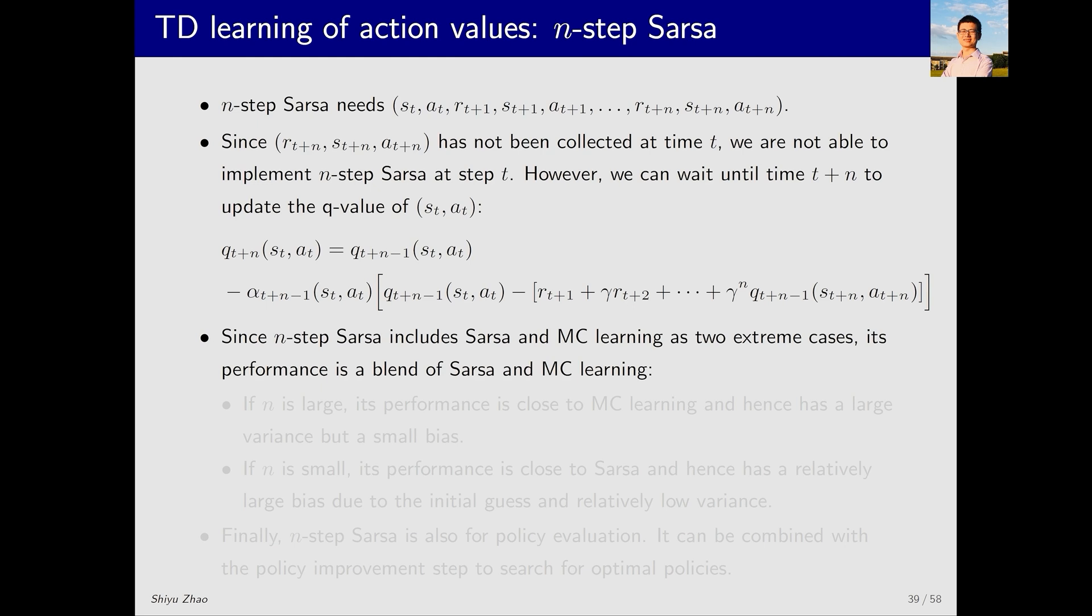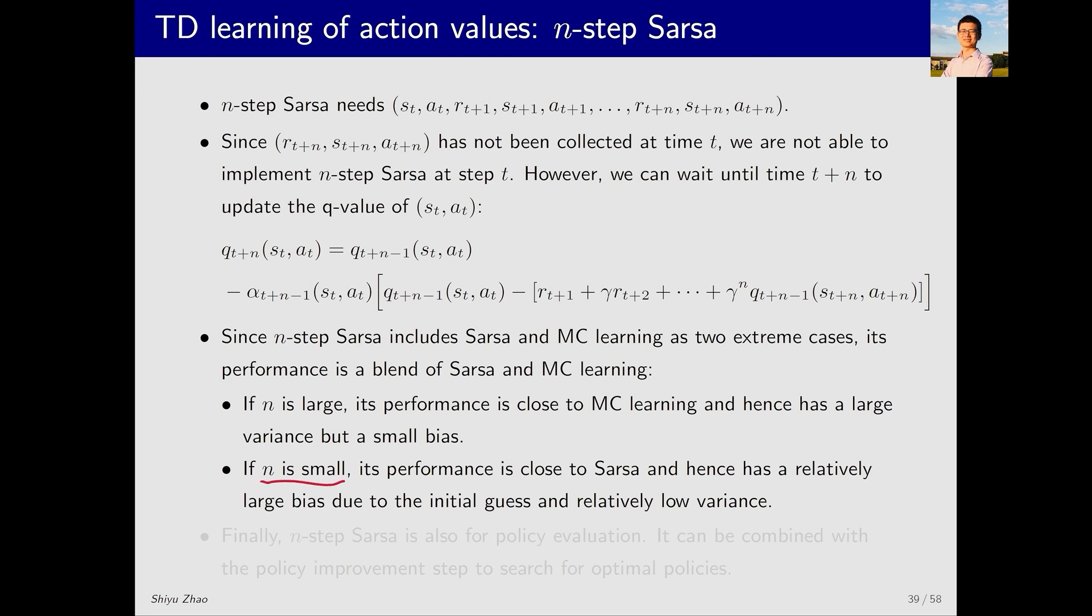Since Monte Carlo and SARSA are the two extreme cases of N-step SARSA, N-step SARSA naturally exhibits properties that are a mix of both. When N is large, its properties are closer to those of Monte Carlo learning, with a large variance but a small bias. We have already discussed the variance and bias in detail when comparing TD and Monte Carlo learning, so I won't repeat that here. When N is small, its performance is closer to SARSA, with a larger bias due to initial guesses, which decreases as more data is collected, but with relatively low variance.